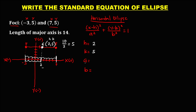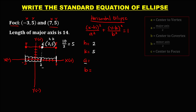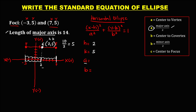To solve for a, we use the different formulas. Since the given length of the major axis is 14, and half of the major axis equals a, we divide 14 by 2, so a is equal to 7.